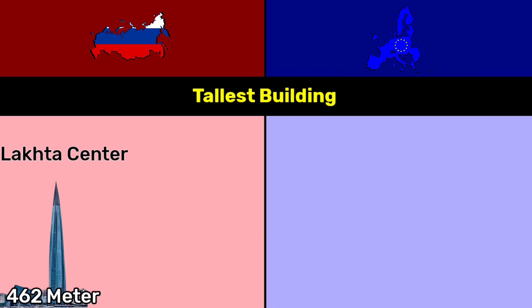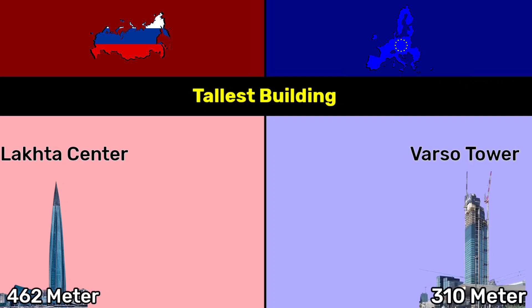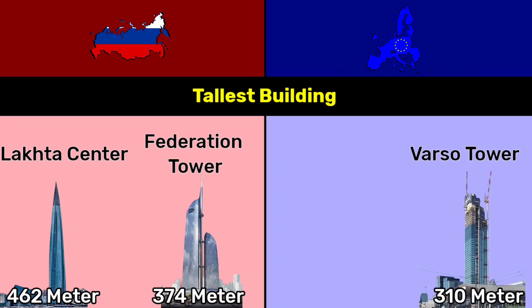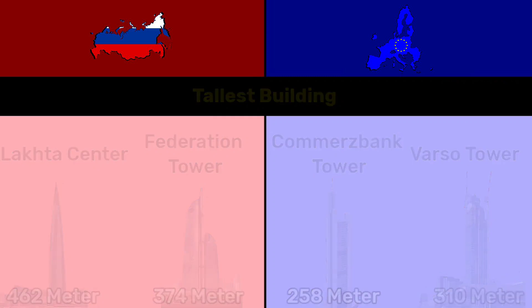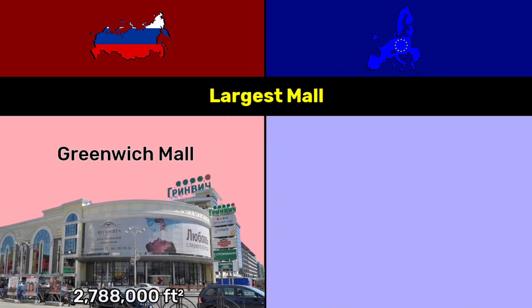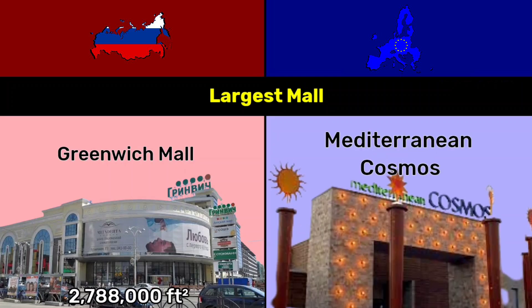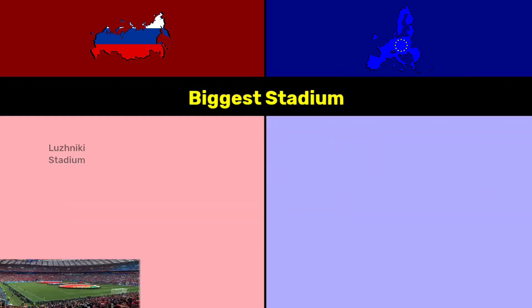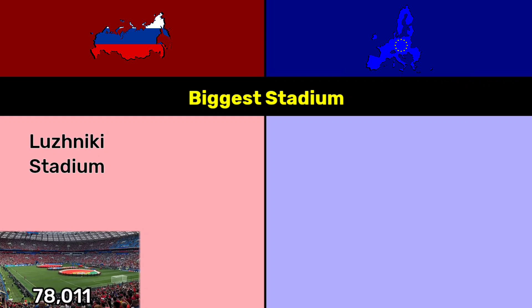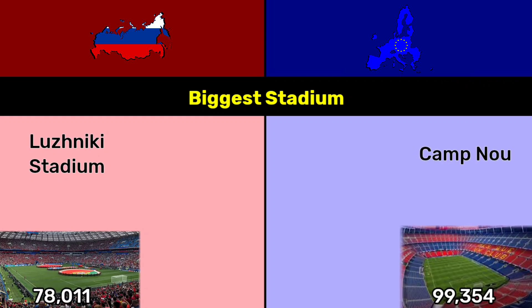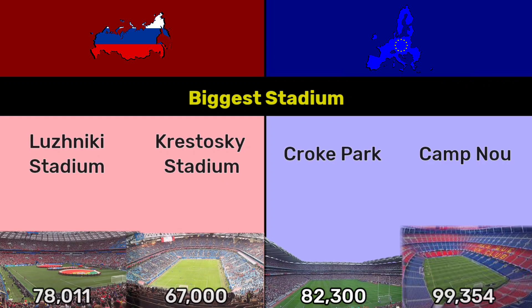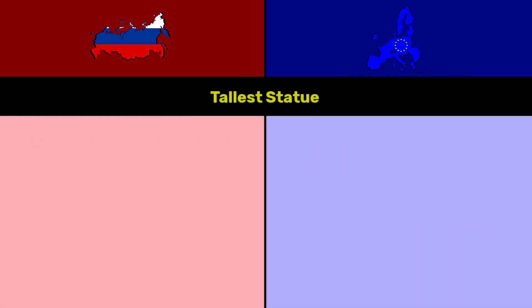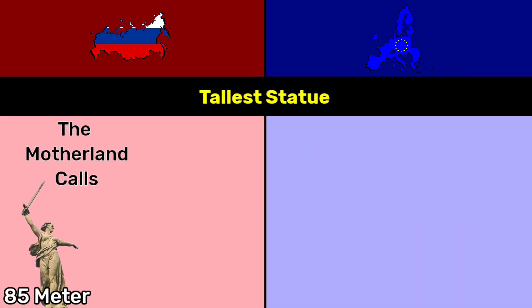Tallest building: Russia — Lakhta Center at 462 meters and Federation Tower at 374 meters; EU — Verso Tower at 310 meters and Commerzbank Tower at 258 meters. Largest mall: Russia — Aviapark/Greenwich Mall at 2.788 million square feet; EU — Mediterranean Cosmos at 1 million square feet. Biggest stadium: Russia — Luzhniki Stadium at over 78,000 and Krestovsky Stadium at 67,000; EU — Camp Nou at 99,354 and Croke Park at 82,300.